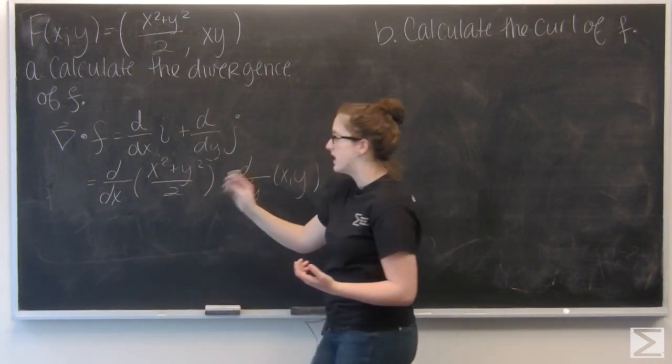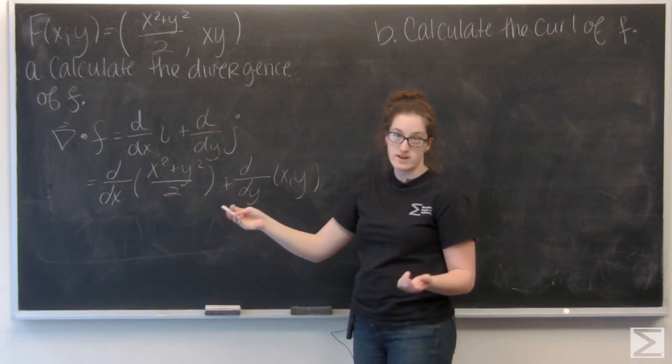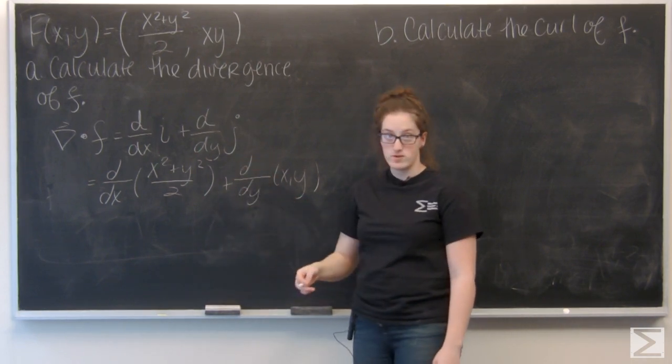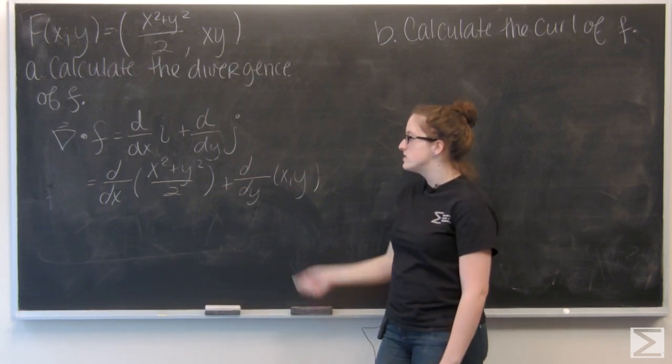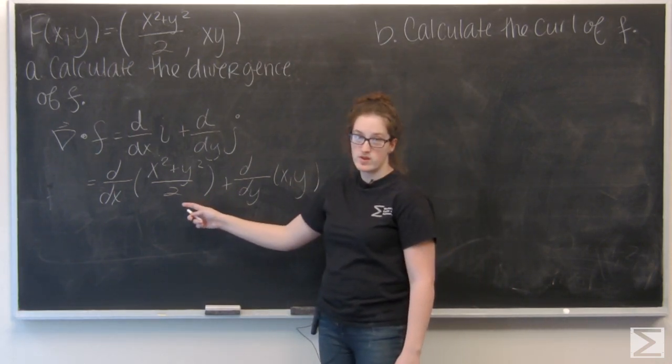So I have the partial derivative with respect to x of x squared plus y squared over 2 plus the partial derivative with respect to y of x times y. So let's go ahead and do this first component.